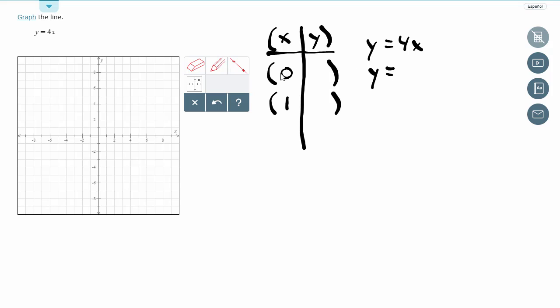And then I'm going to substitute my x value, 0, in place of x. And I can see here it says y is equal to 4 times 0. 4 times 0 is 0. So my output is 0. So when x is 0, y comes out to be 0.